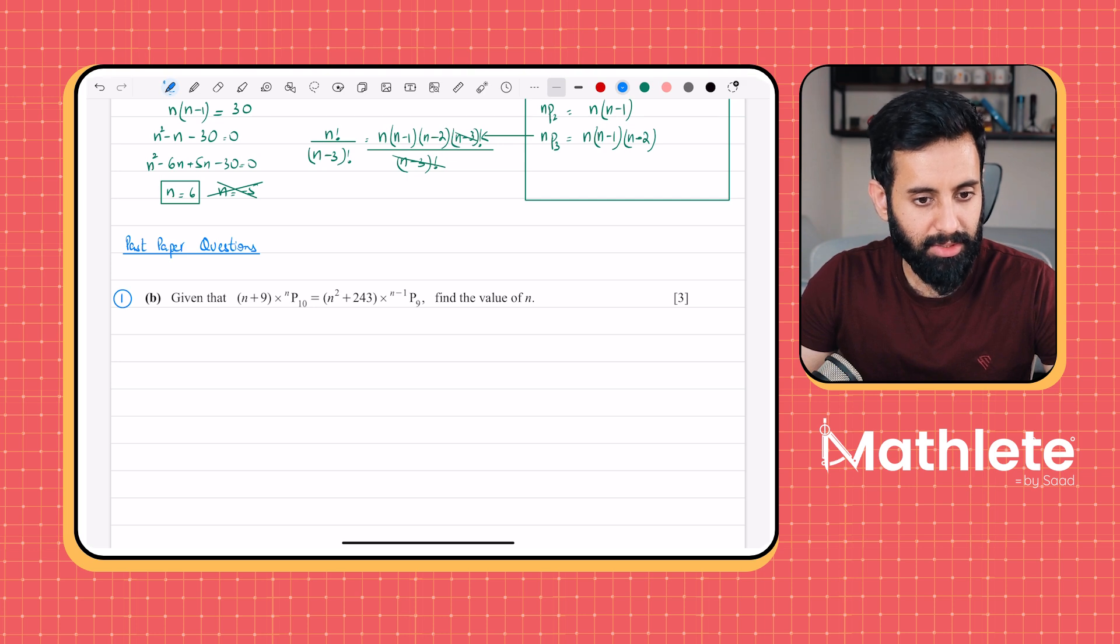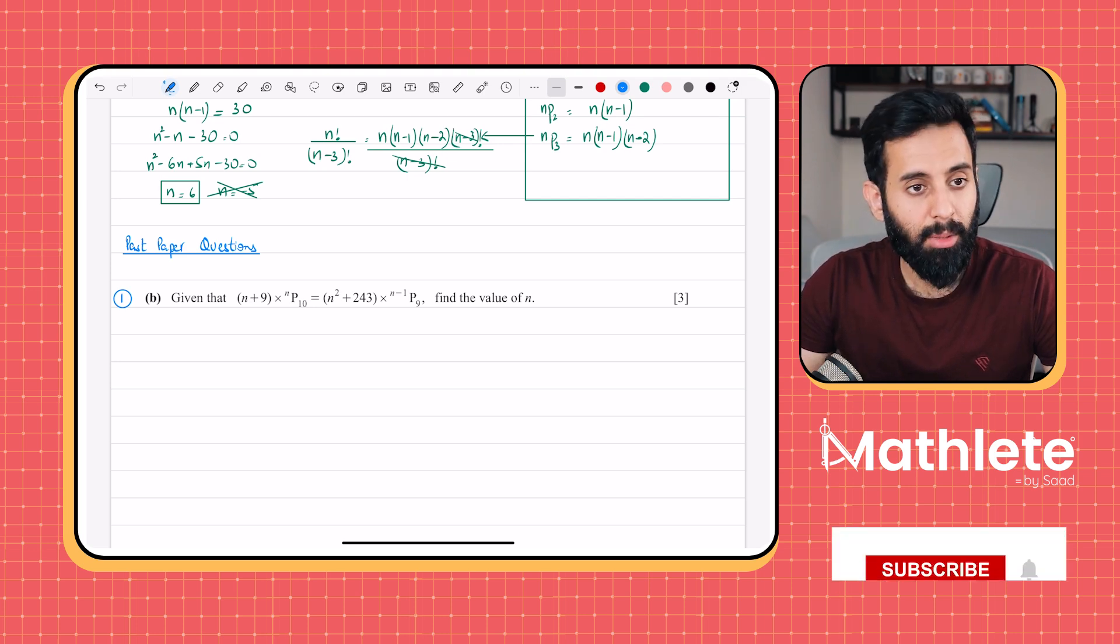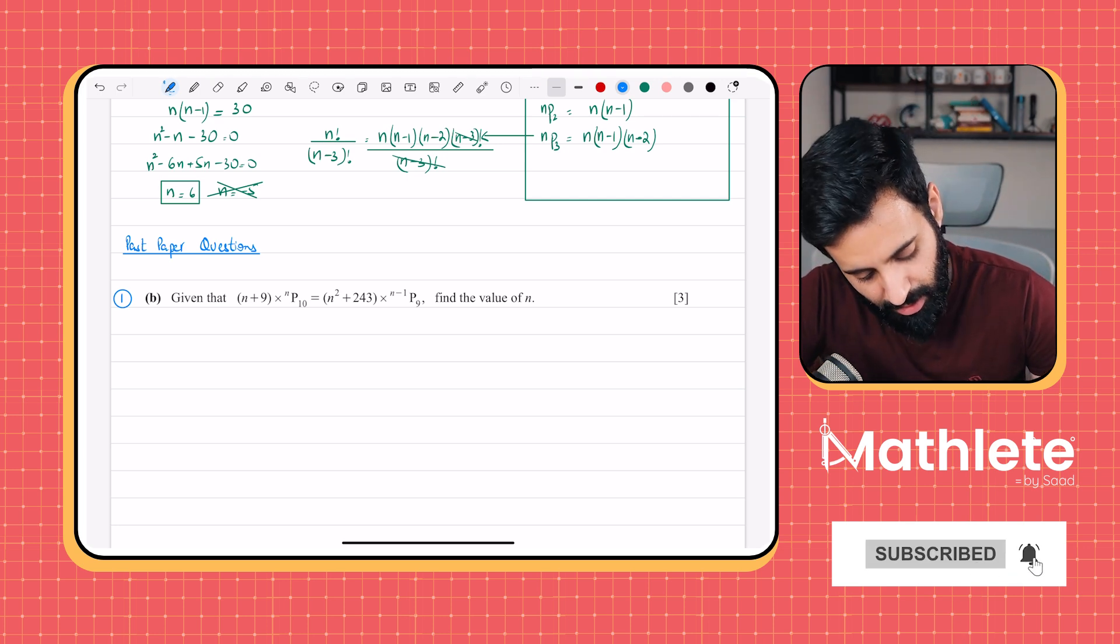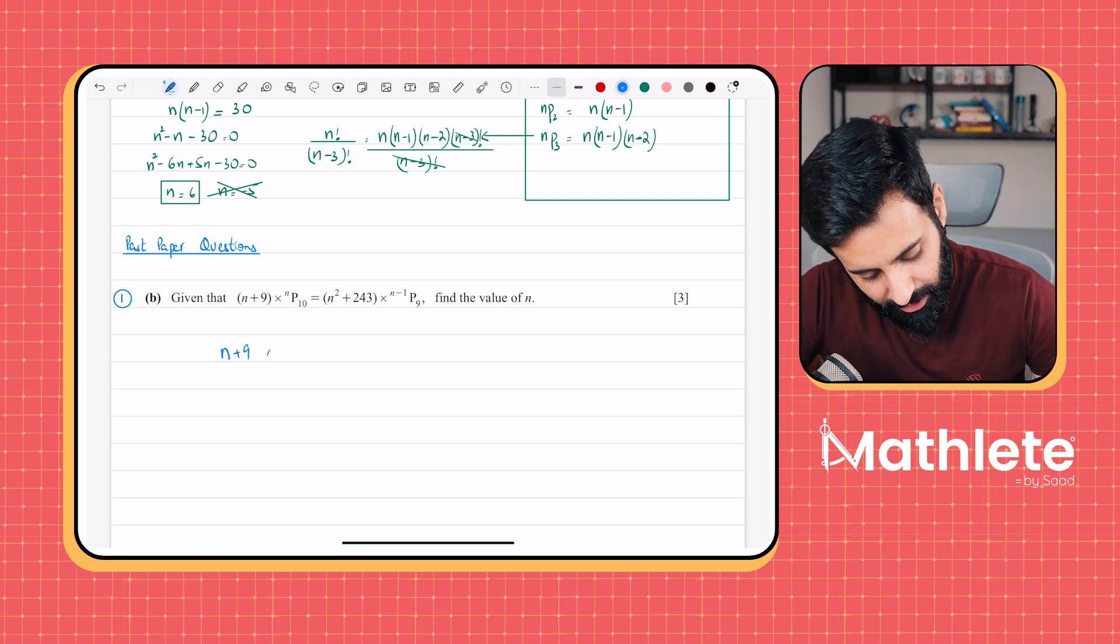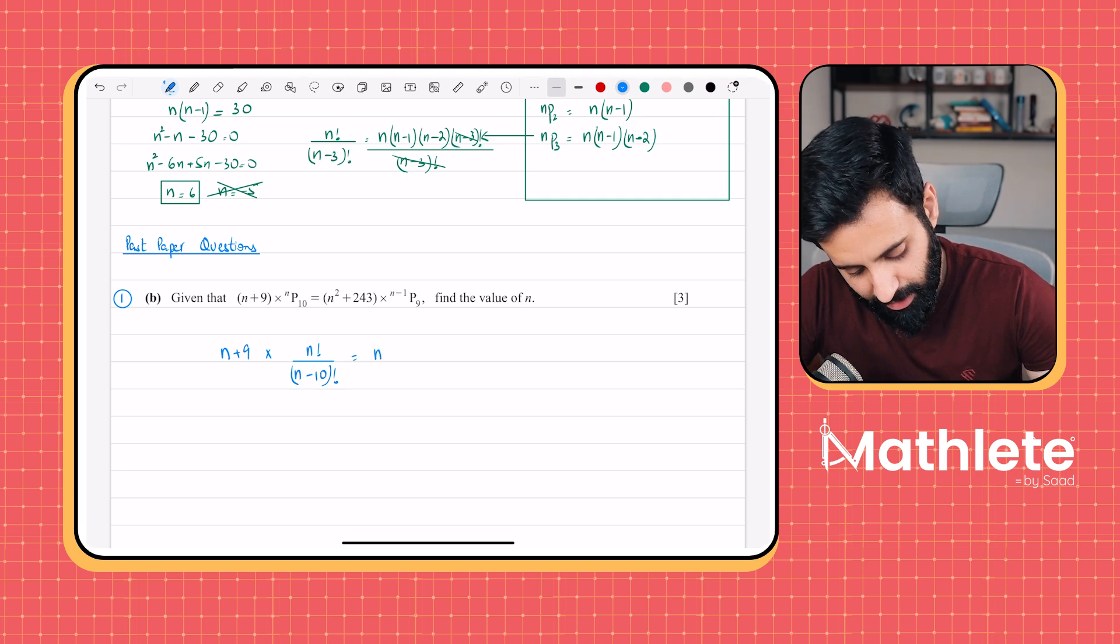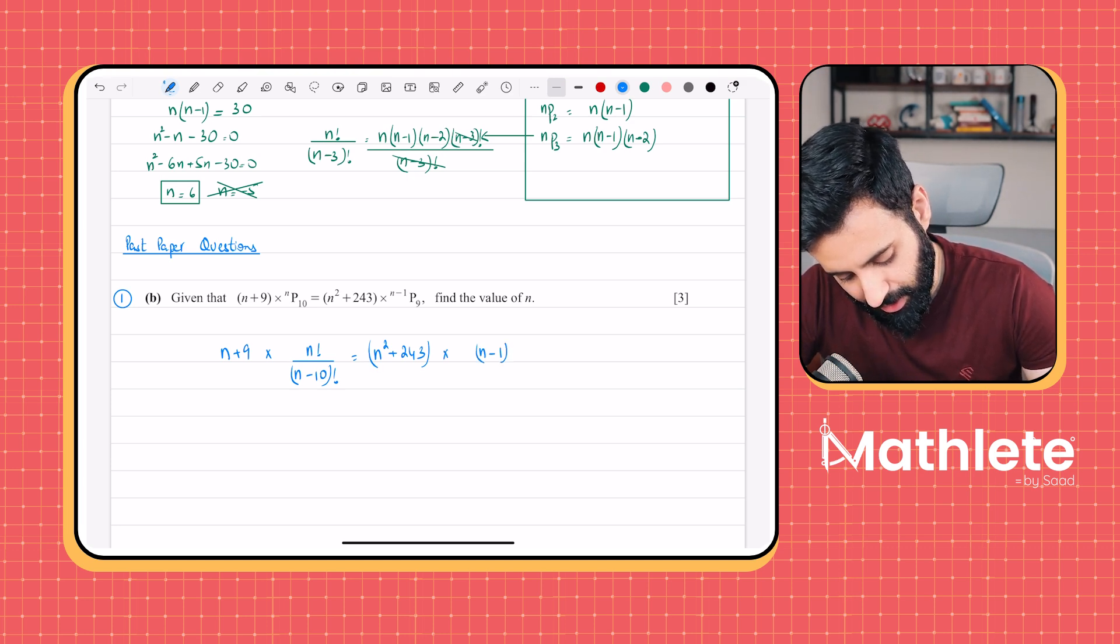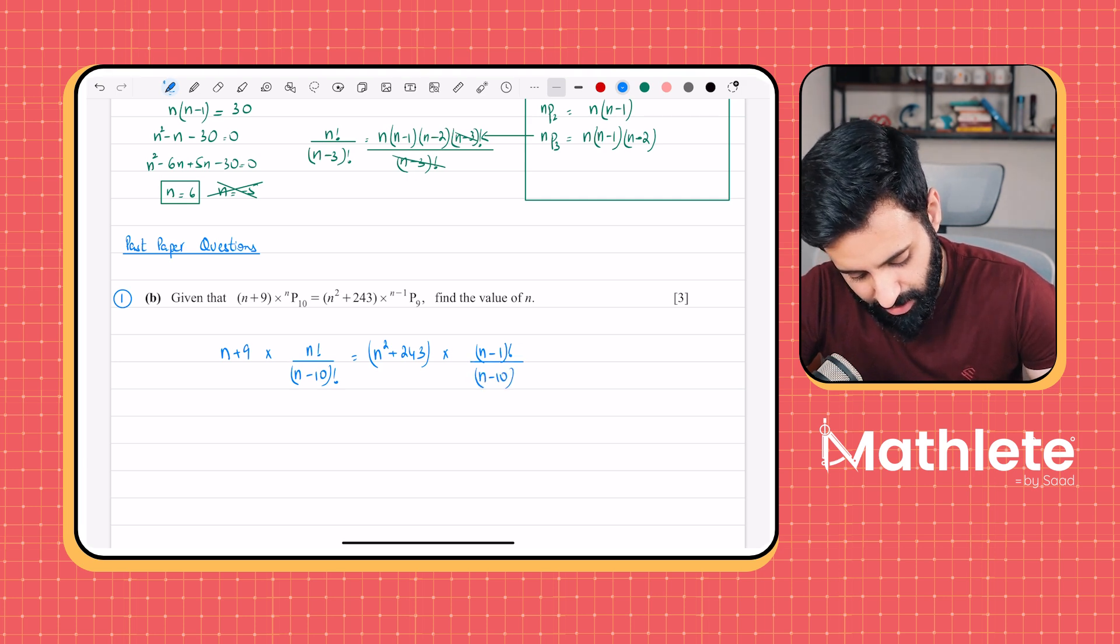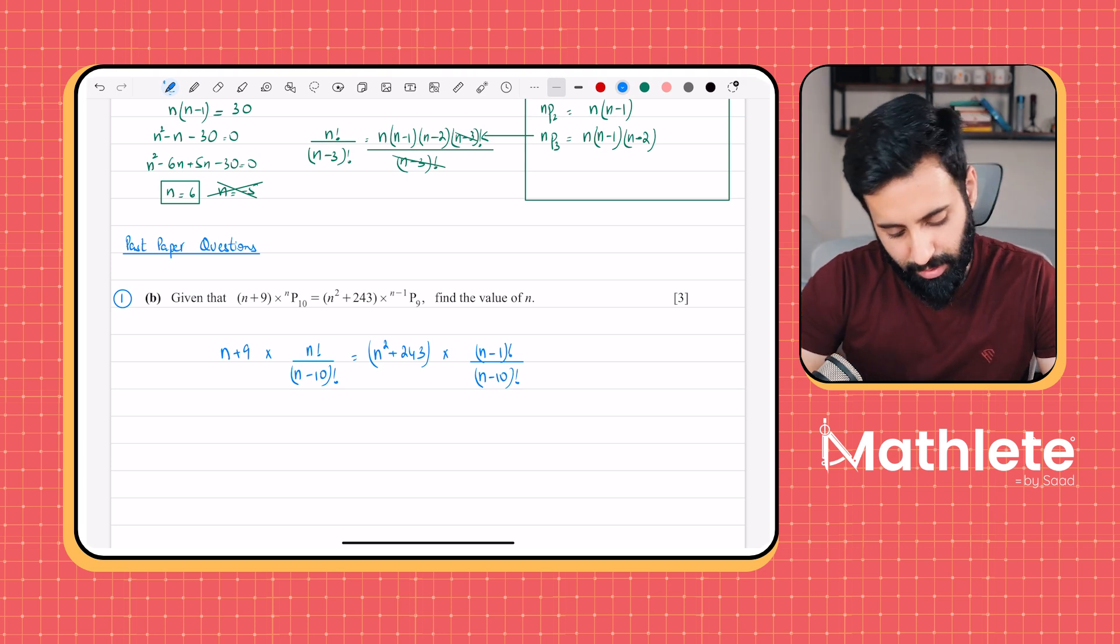So let's solve this. As far as N plus 9 is concerned, we're not going to change that. But as far as NP10 is concerned, we have to change. So N plus 9 into NP10, which means N factorial over N minus 10 factorial, equals to N square plus 243 into N minus 1 P9. So that means N minus 1 factorial divided by N minus 1 minus 9, which means N minus 10 factorial. You can add some extra layer of working if you want.